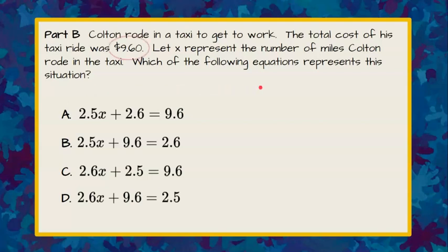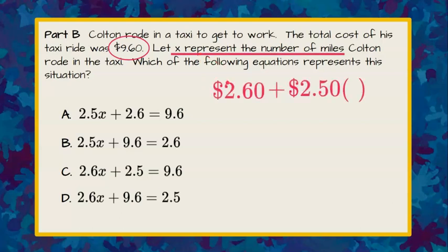Welcome back. So we know from our previous question that we are going to put all this information together and that Colton spent $9.60. We don't know how many miles he went but we know that he's going to spend $2.60 to get into the taxi cab and then $2.50 per mile. We're going to put in X in our parentheses and it's all going to equal $9.60. Now I've noticed in all of my multiple choice answers that they didn't put that trailing zero in the money so we're going to take off our trailing zeros.